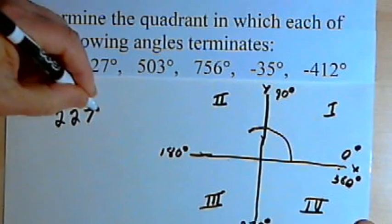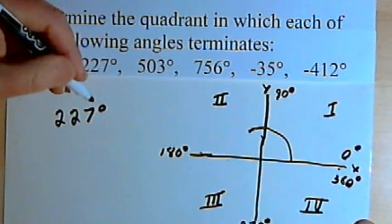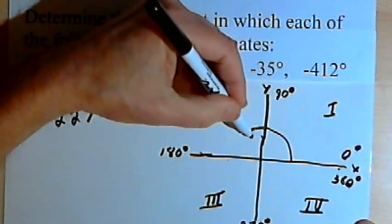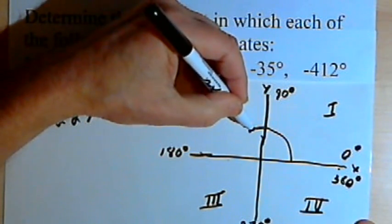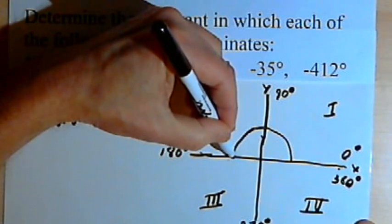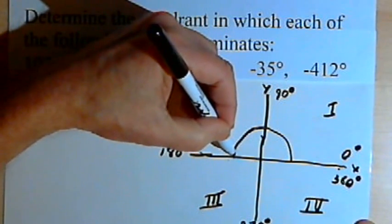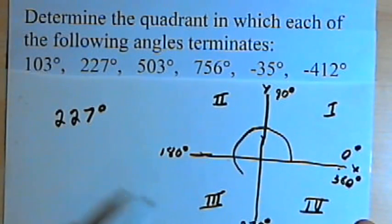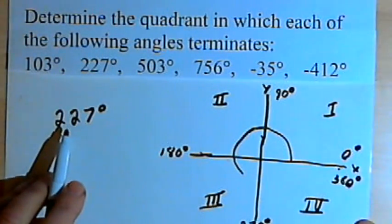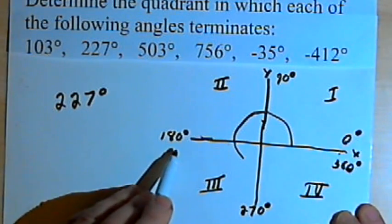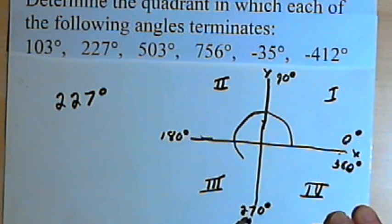For 227 degrees, the angle goes through the first quadrant, then through the second quadrant — it's covered 180 degrees — and it ends up somewhere in the third quadrant, because 227 degrees is between 180 degrees and 270 degrees.